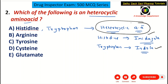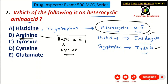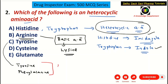Arginine belongs to the category called basic amino acid. Apart from arginine, lysine is also an example for basic amino acid. So lysine and arginine are examples for basic amino acids. Coming to C choice, tyrosine — you should remember tyrosine and phenylalanine belong to aromatic amino acid. Tryptophan is also an example for aromatic amino acid.